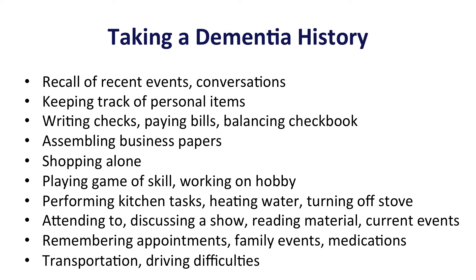In taking a dementia history, it is important to start with open-ended questions and to touch on topics that a patient or their informant may not think are relevant. These can include difficulty recalling recent events and conversations, difficulty keeping track of personal items, difficulty managing finances or assembling business papers, inability to shop alone or play a game of skill or work on hobbies, difficulty with household tasks, forgetting material recently read, forgetting appointments or family events, difficulty managing medications, and driving difficulties.